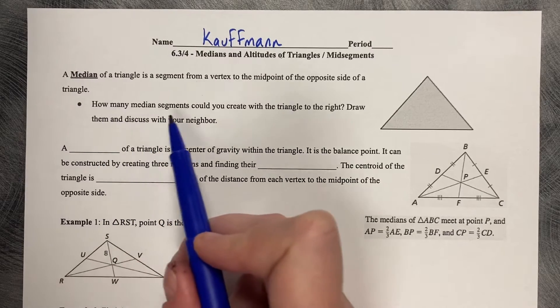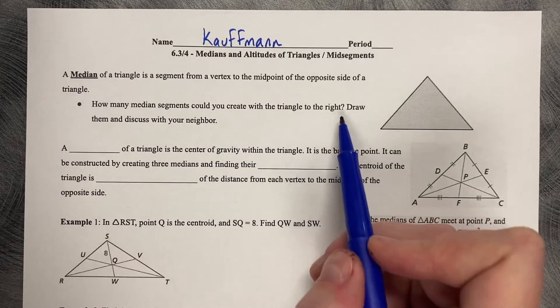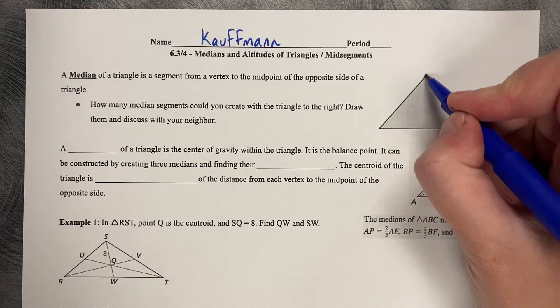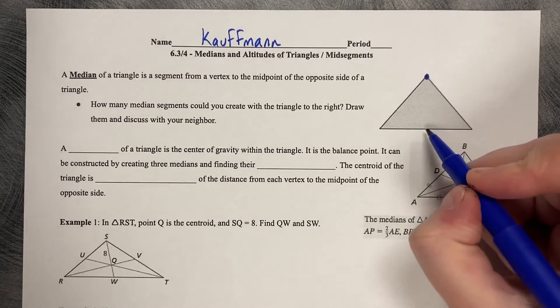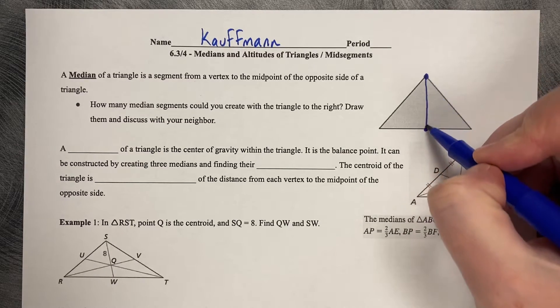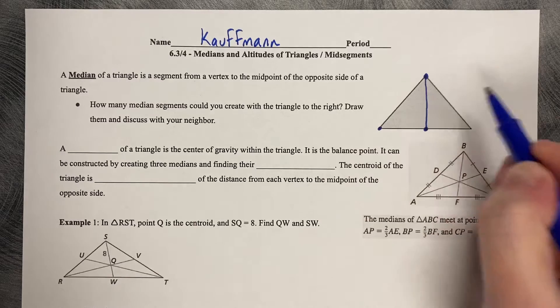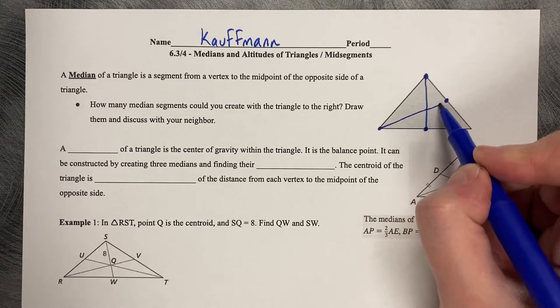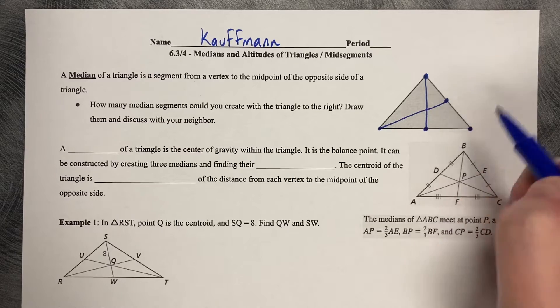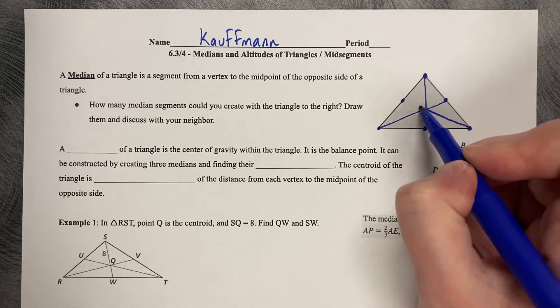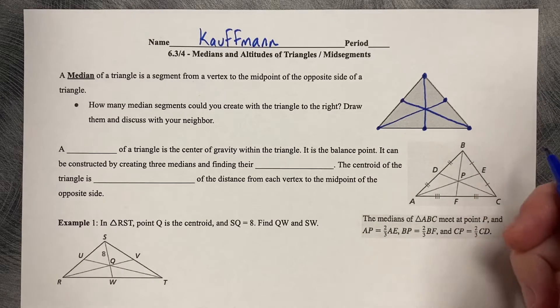How many median segments could you create with a triangle to the right? Draw them and discuss with your neighbor. So it's from a vertex to a midpoint. So here's one midpoint to a vertex, here's the other vertex, opposite side midpoint. Another vertex, opposite side, midpoint. So we can draw three medians in each triangle.